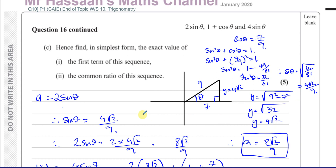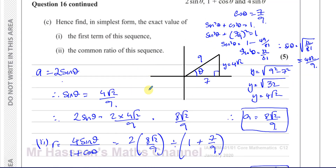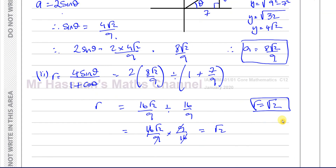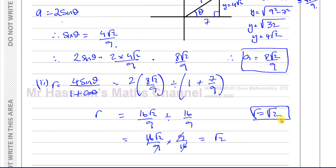You can use either the identity or the right-angle triangle to find sin θ or cos θ. In this case we only needed sin θ, and it's positive because we're in the first quadrant. That completes the question.